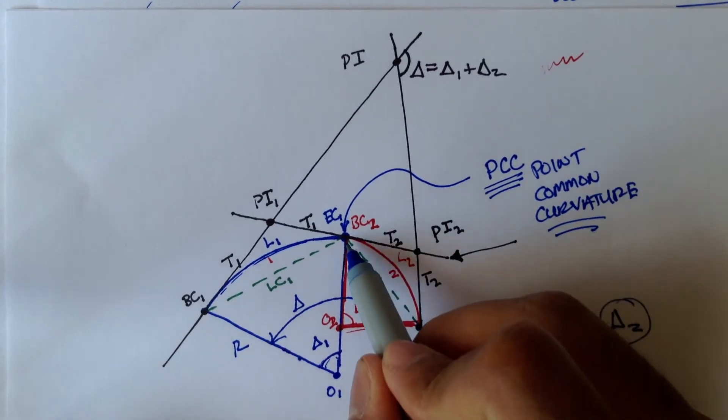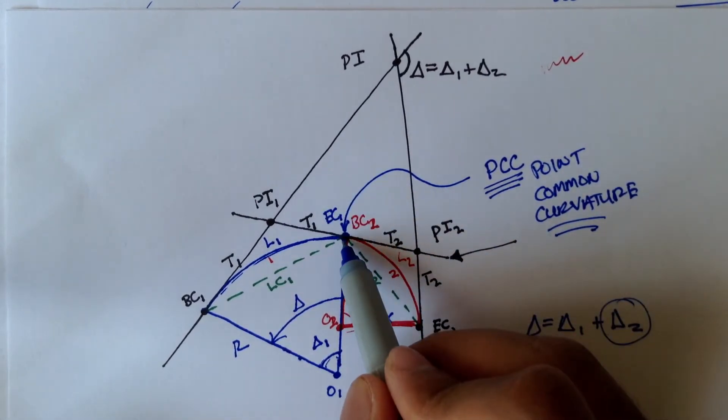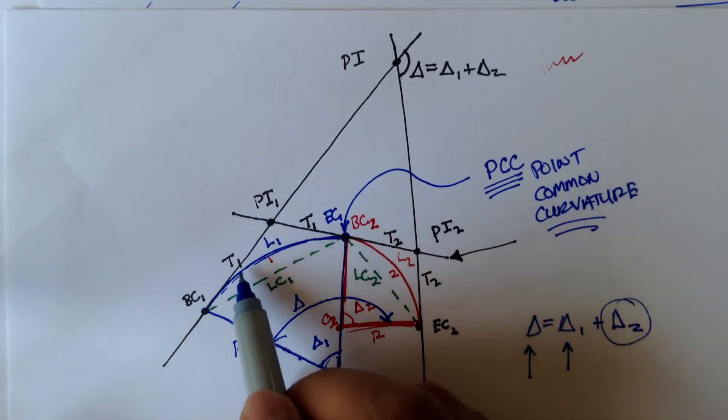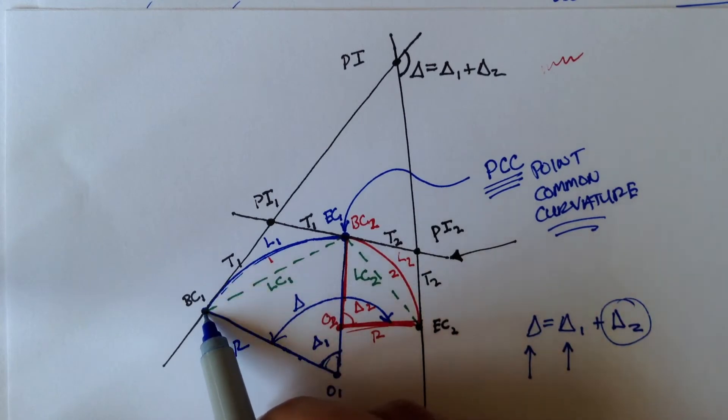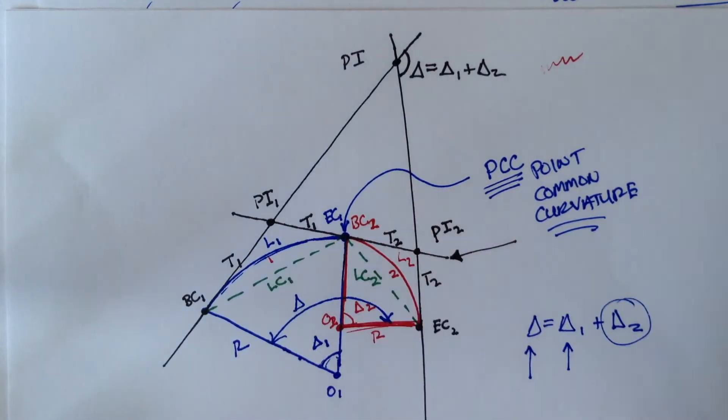And remember, if you're given EC, you can't just subtract T to get PI1. You have to take EC, subtract from it the length of the curve to come to BC1, and then from BC1, add T to get to PI1. So let's do that.